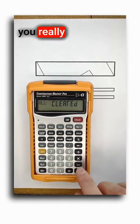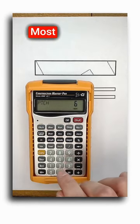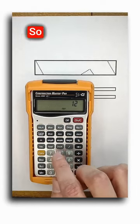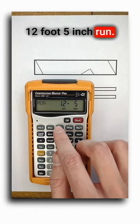Other than pitch, all you really need to tell the calculator is either the rise or run. Most commonly you'll enter run, so after entering pitch I'll enter a 12 foot 5 inch run.